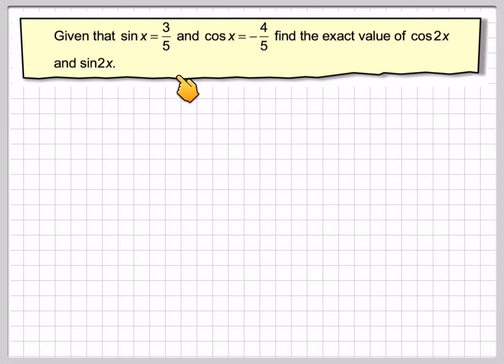Given that sine x is 3 fifths and that cos x is minus 4 over 5, find the exact value of cos 2x and sine 2x. So sine x is 3 fifths and cos x is minus 4 fifths.